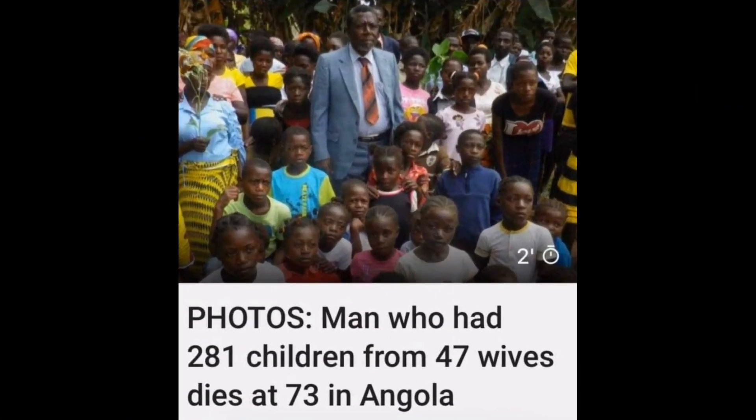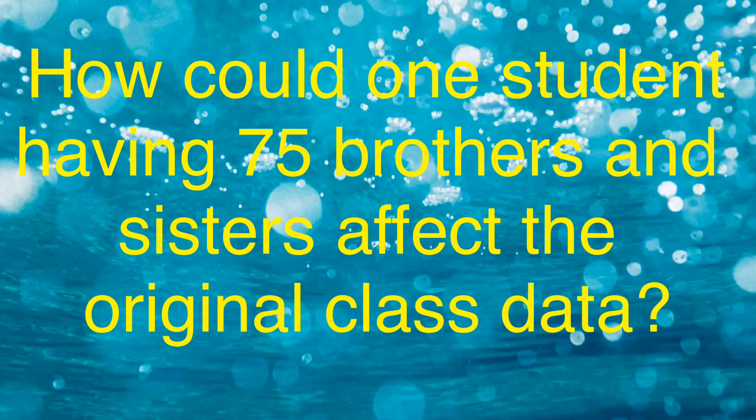Today, I saw this picture. It reminded me of a student I had my first year teaching, except her father had 75 children with 15 wives. How could one student having 75 brothers and sisters affect the original class data?